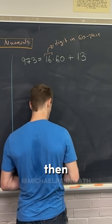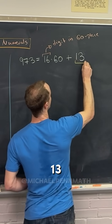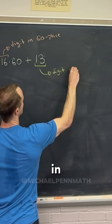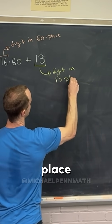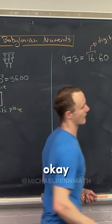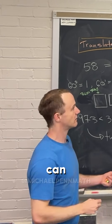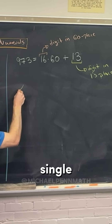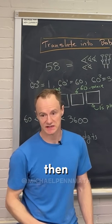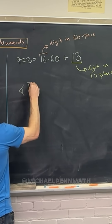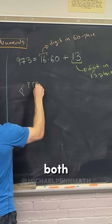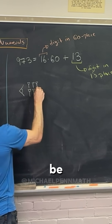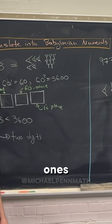And then this number right here, 13, will be the digit in the ones place. So we can write down that 16 — that's going to be a single 10 and then six ones. And then we had a way to write both of those kinds of things, so we'll just do that. So that would be a single 10 and six ones.